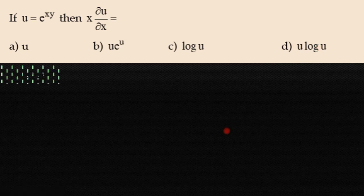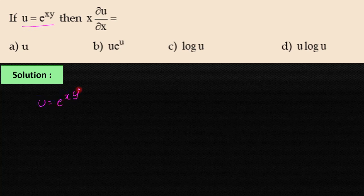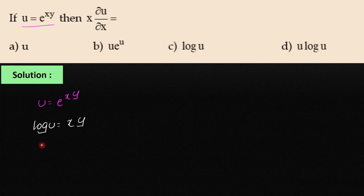Let us find this. Given u = e^(xy). Now taking log on both sides, we get log u = xy. Now partially differentiating with respect to x on both sides, we get (1/u)·∂u/∂x equals,